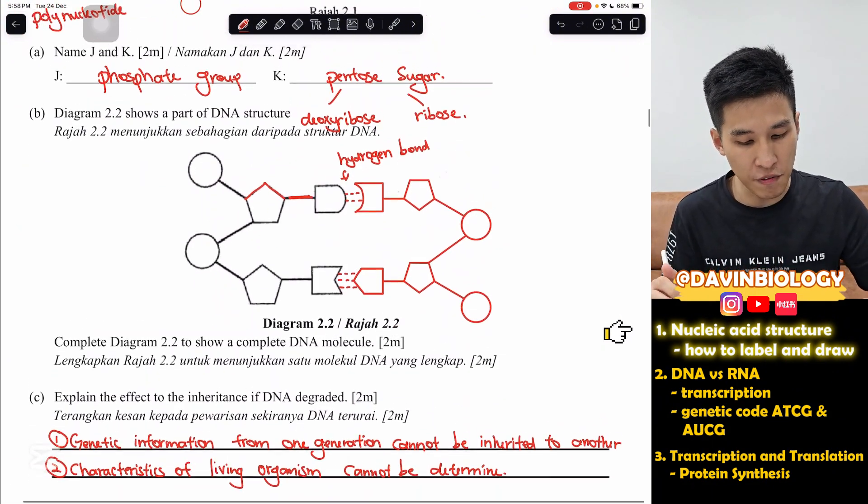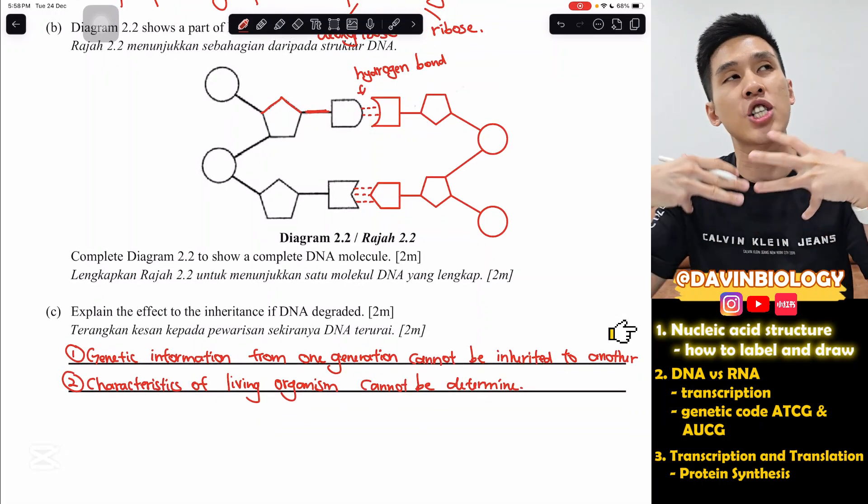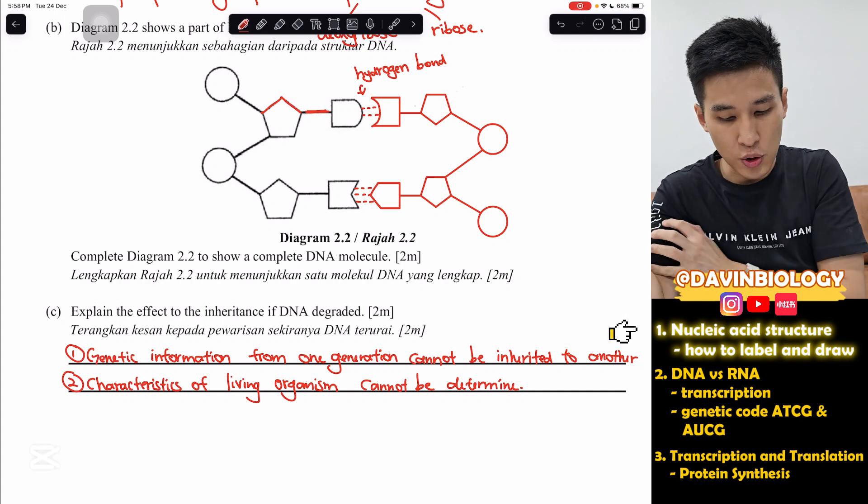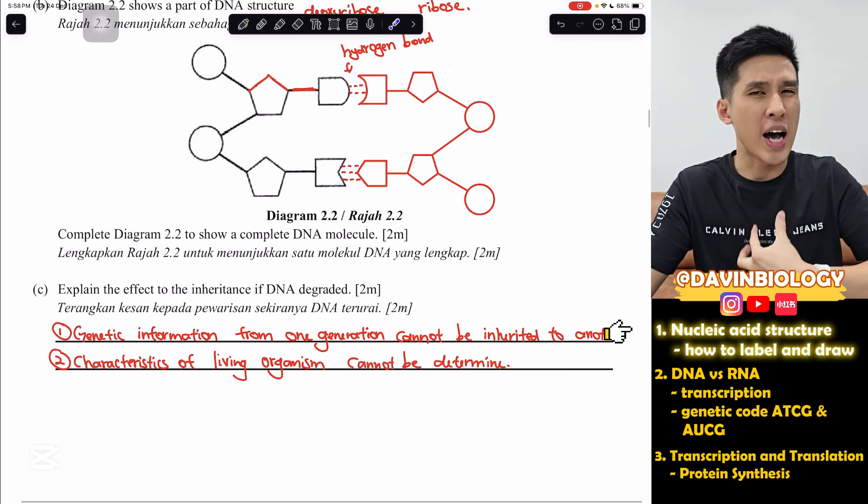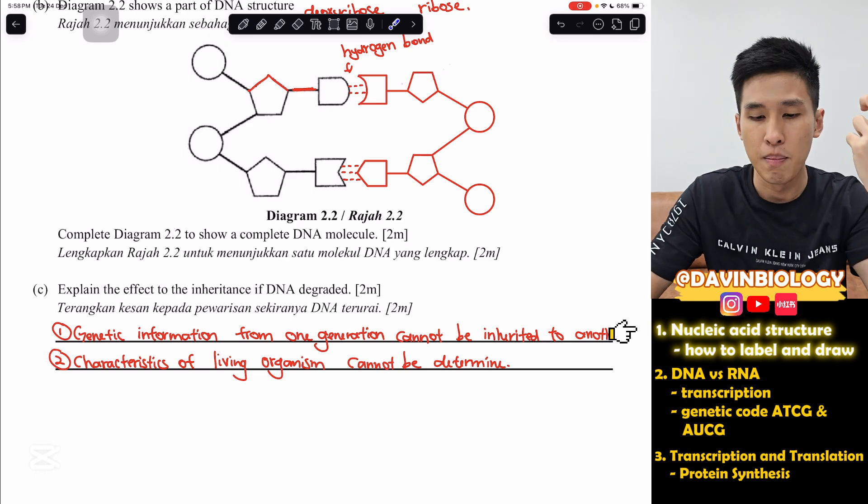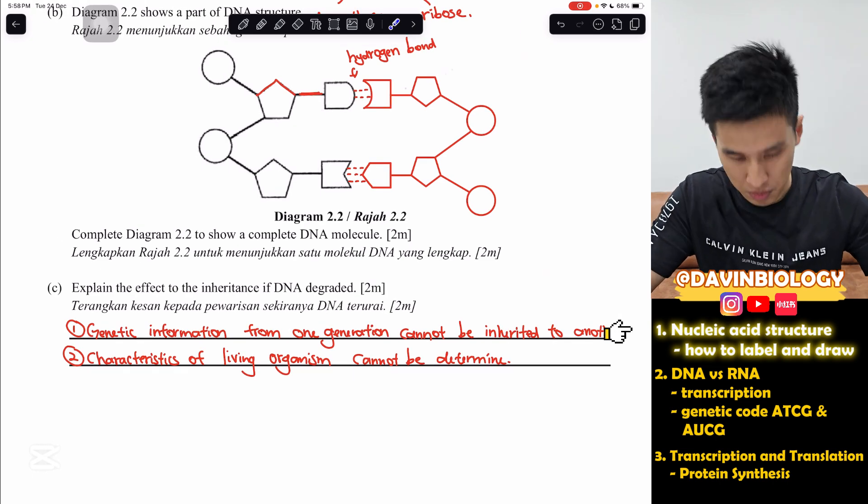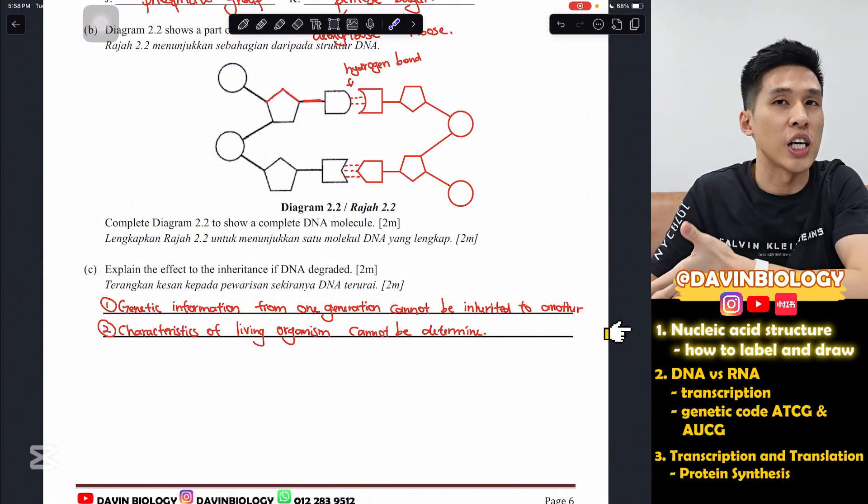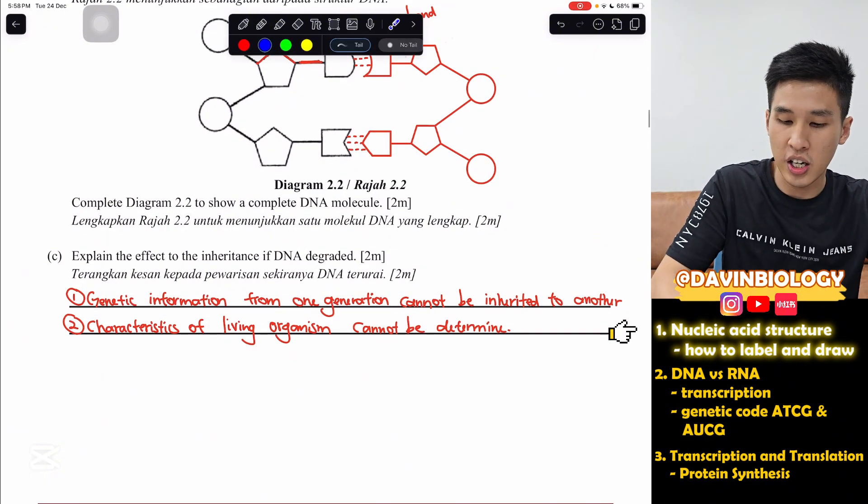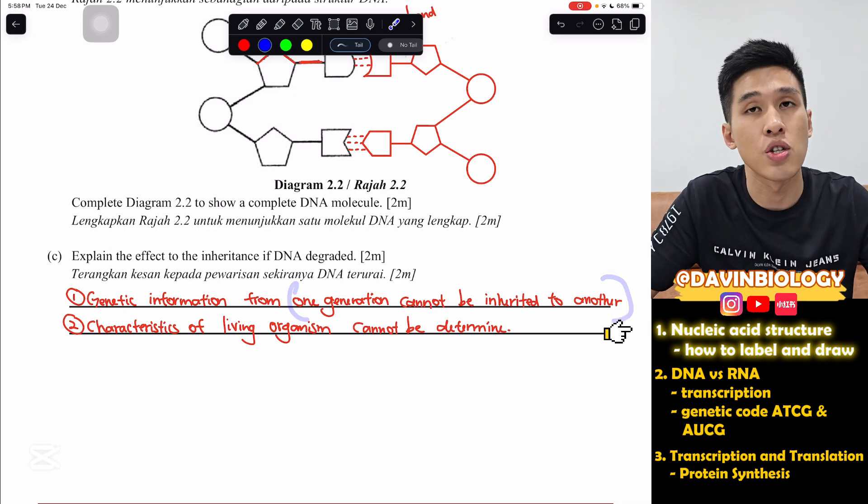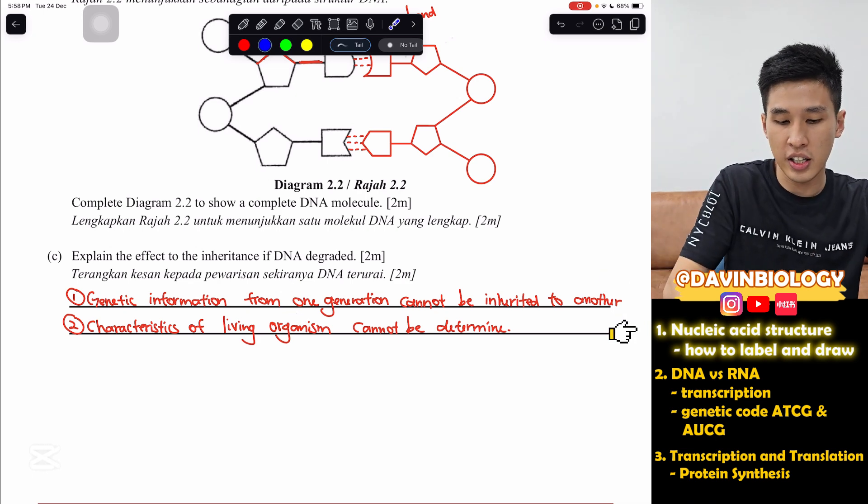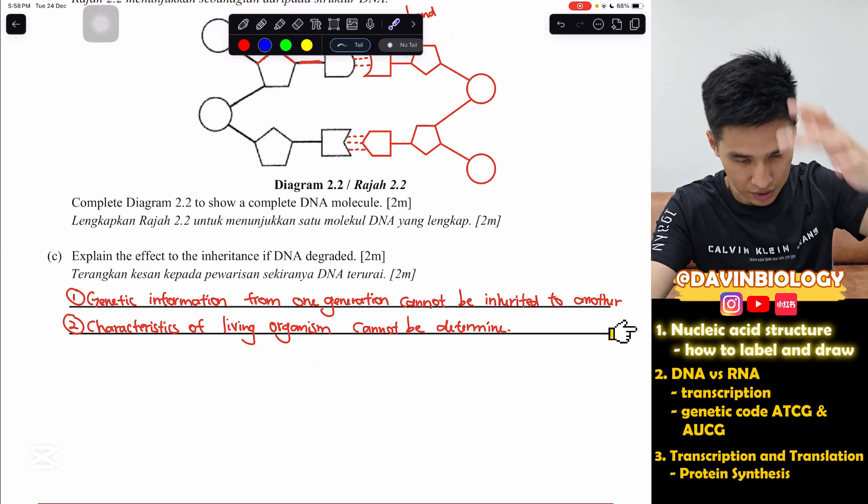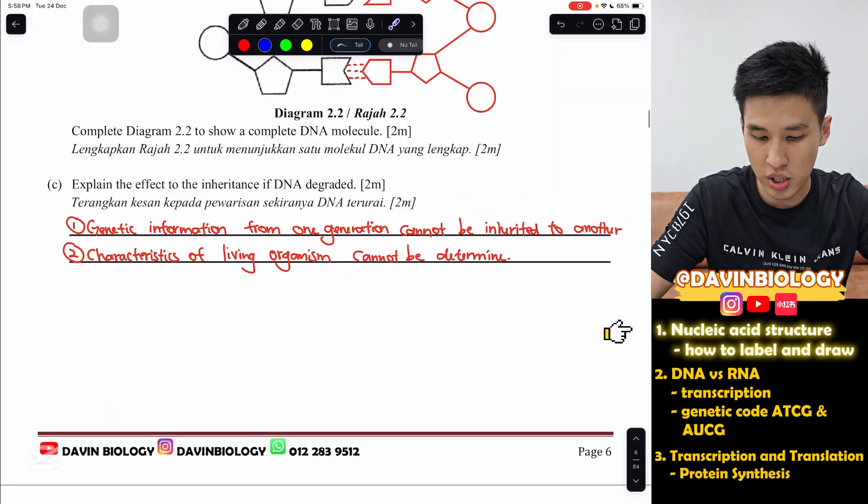Next question. Explain the effect to the inheritance if DNA is degraded. If somebody has DNA is degraded, your characteristics will be degraded. So, basically, you then very hard to pass on this genetic information from one generation to another. Let's say my hair punya jean got a problem. So, therefore, when I give birth to someone, the child punya hair may be degraded. Genetic information for one generation cannot be inherited to another. And the characteristics cannot be determined. So, maybe the child punya hair got a problem or something like that.